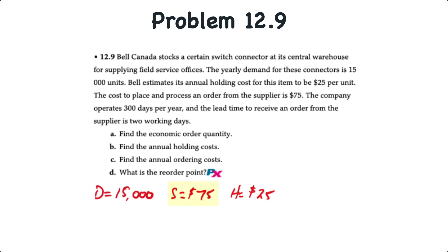Now we'll move on to problem 12.9. Here Bale Canada stocks switch connectors at its central warehouse. The annual demand for these connectors is 15,000 units. The company estimates its holding cost to be $25 per unit, and the cost to place and process an order from the supplier is $75. The company operates 300 days per year, and the lead time to receive an order from the supplier is two working days.